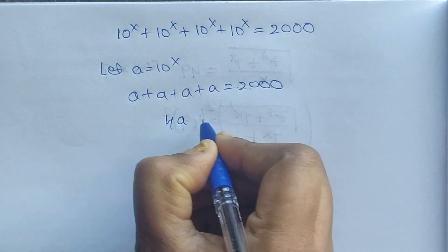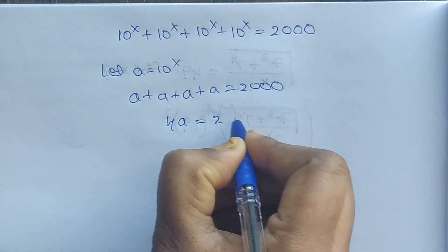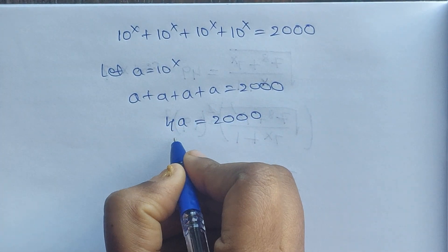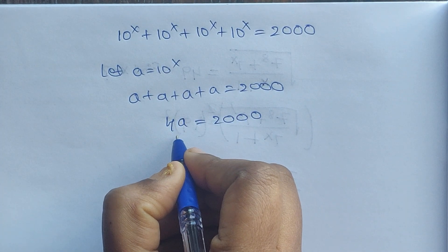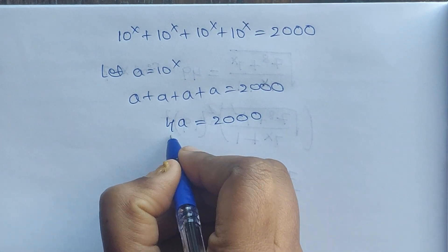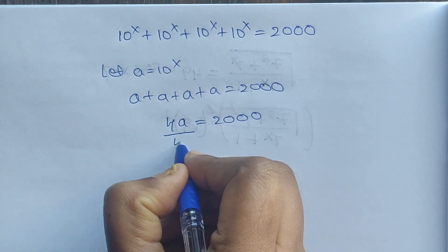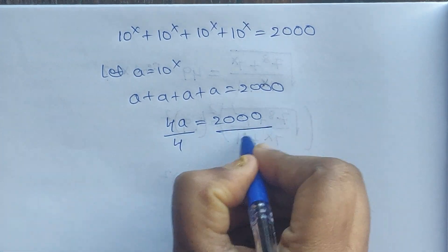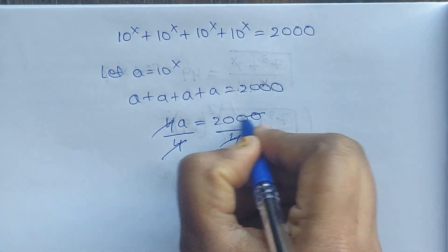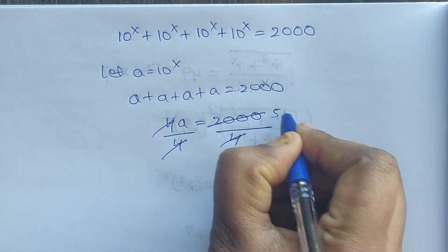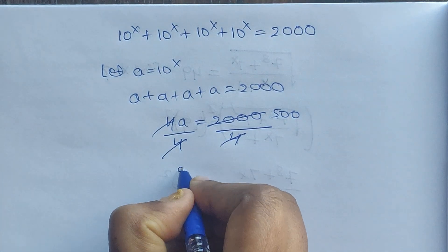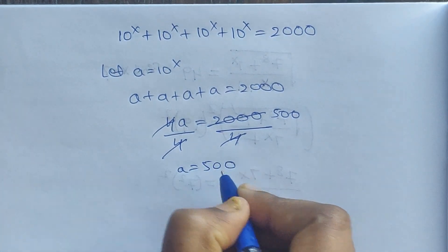So 4a equals 1000. Dividing both sides by 4, the 4 gets cancelled, giving us a equal to 500.